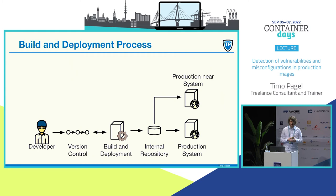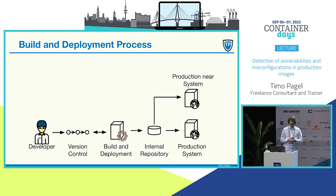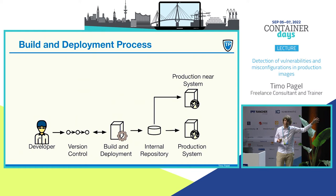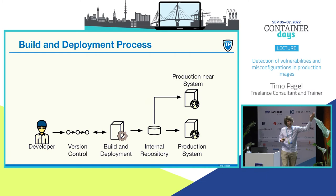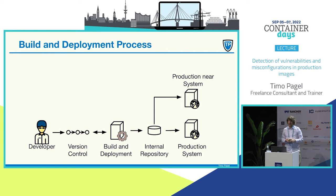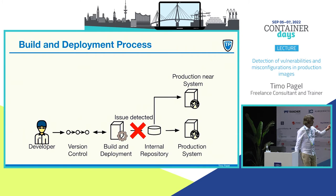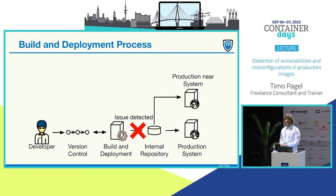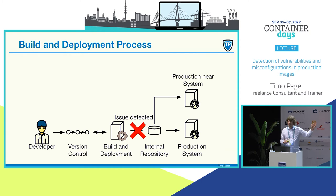This is a typical build and deployment pipeline. You have the developer, version control, a build server, an internal repository or registry, a pre-production system, and the production system. When it comes to known vulnerabilities, what is very important for your process from my point of view is that when you have an issue, you don't stop the pipeline there. Most people tend to stop the pipeline. From my point of view, that is not helping, because the developer might have just fixed a vulnerability and another one just came from a researcher, and then you stop the developer from deploying the new patch.